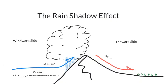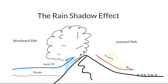Rain shadow deserts happen where mountains block moisture from the oceans. As moist air is carried inland by onshore winds, mountains force the air upwards. As it rises, it expands and cools. Cool air can't hold as much moisture as warm air, so condensation happens, making clouds that yield precipitation on the windward side of the mountains. As the dry air descends the leeward side, it contracts and warms, resulting in arid conditions, such as those found in the southwestern U.S.